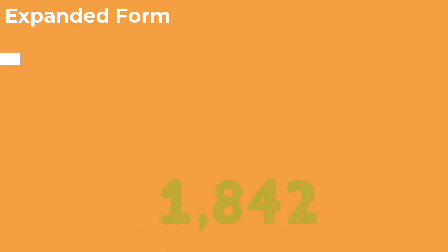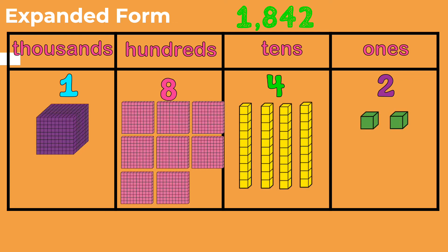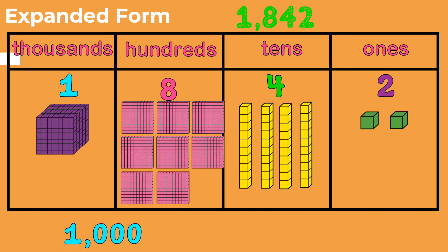A number that is written in expanded form is written as the sum of the place values of each digit. Let's look at exactly what this means. Let's say I need to write the number 1,842 in expanded form. To do this, I will start by placing each digit inside of a place value chart. Once the digits are inside the place value chart, I will sketch or build them using base 10 blocks. Afterwards, I am going to determine the value of each of these digits. The value of the 1 in the thousands place is 1,000. That is the first number in my expanded form.